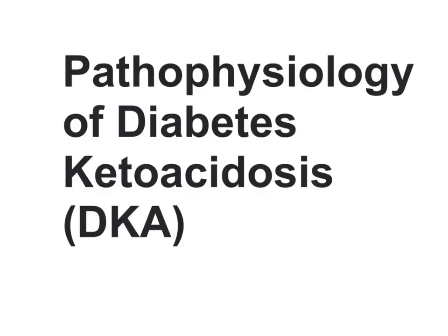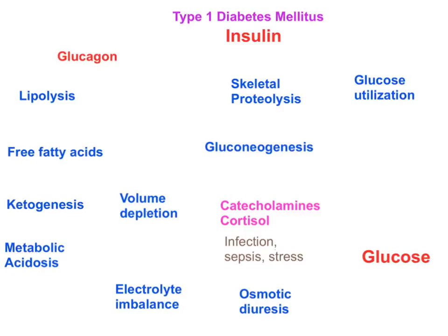With the help of this particular chart, I'm going to explain the entire pathophysiology of diabetic ketoacidosis. In type 1 diabetes mellitus, there will be absolute or relative deficiency of insulin because more than 80% of the beta cell mass is destroyed. This is a continuous autoimmune process, so insulin levels continuously fall, resulting in absolute deficiency.